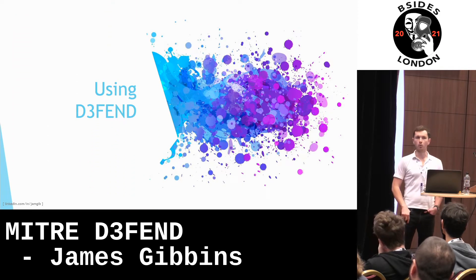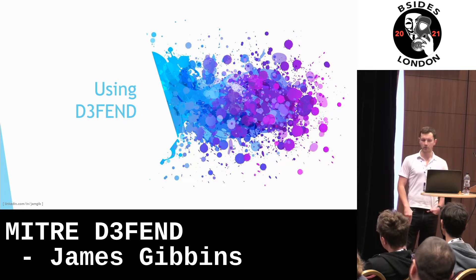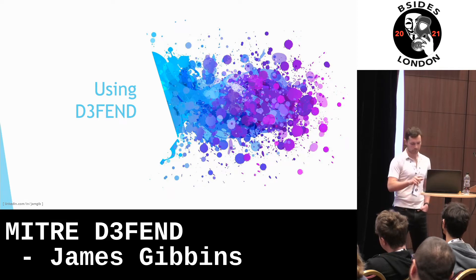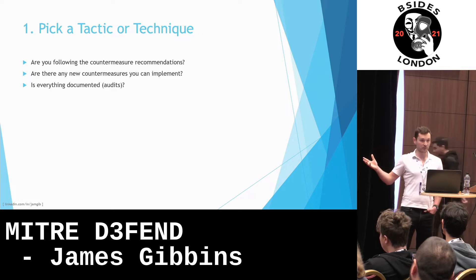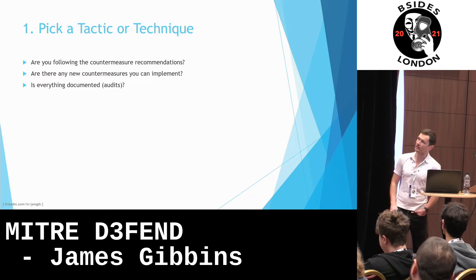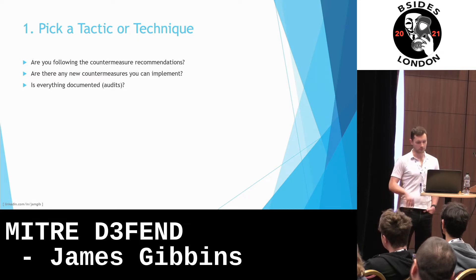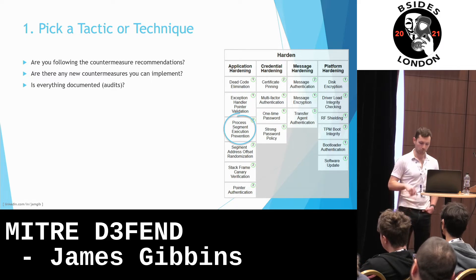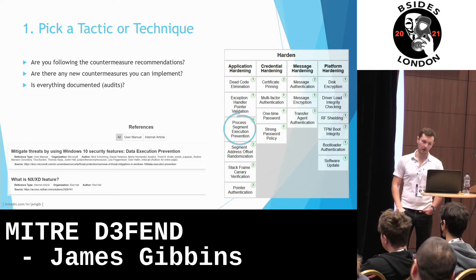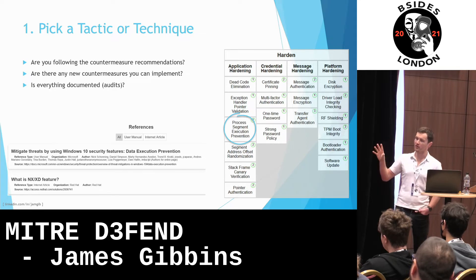That's a quick overview of what the Defend framework is. How can we use it? I've thought of three quite simple but useful examples. One is picking a tactic or technique — you work through the framework, learn about them, and make sure you're following the countermeasure recommendations by looking at the references, checking if there are any new countermeasures you can implement, and making sure everything's fully documented for audit season. For example, under Harden, working through application hardening, you get to Process Segment Execution Prevention. In the references, there's a Microsoft article on how to enable data execution prevention on Windows 10, and a Red Hat article on no-execute and execute-disabled bits which can be enabled in the BIOS.